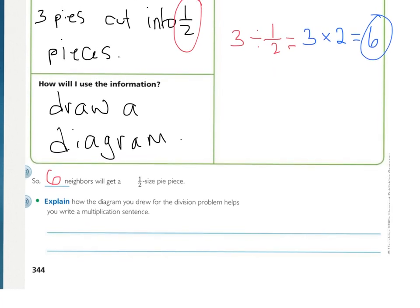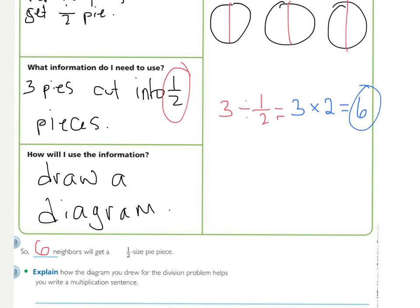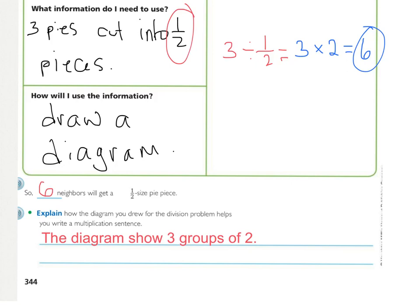Let's look at the explain problem. Explain how the diagram you drew for the division problem helps you write a multiplication sentence. So how does this picture right here of our three circles divided into halves help you write a multiplication problem? Does it show us a certain amount of groups and what is in each group? It does. See if you can write that in a sentence. Essentially, our diagram shows three groups of two, and so we know that three groups of two is a multiplication sentence.